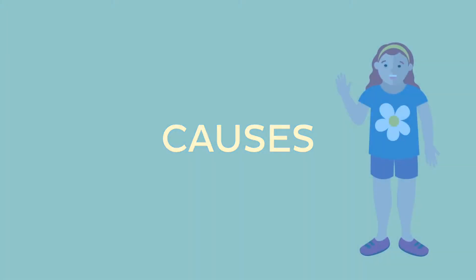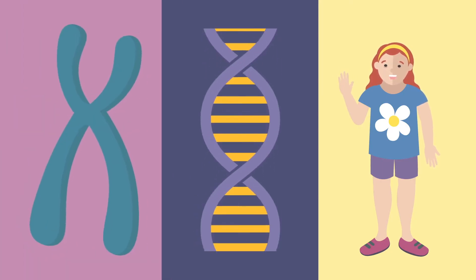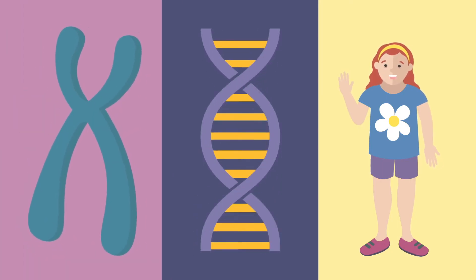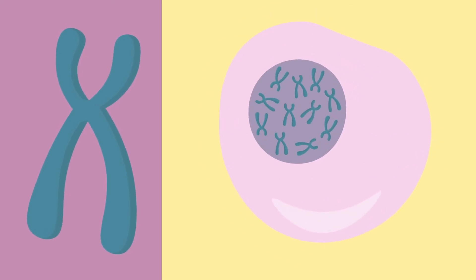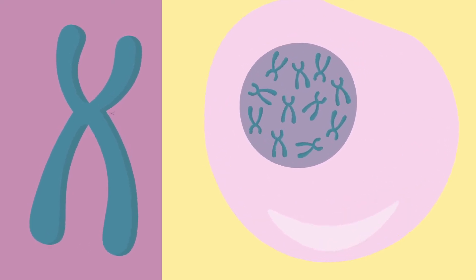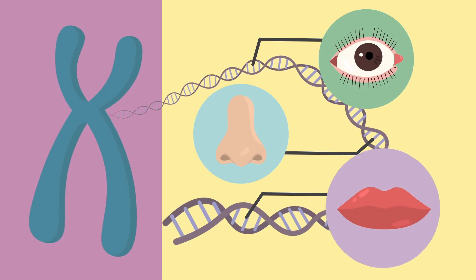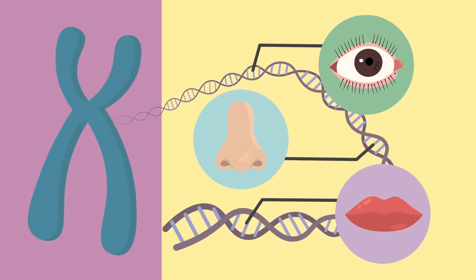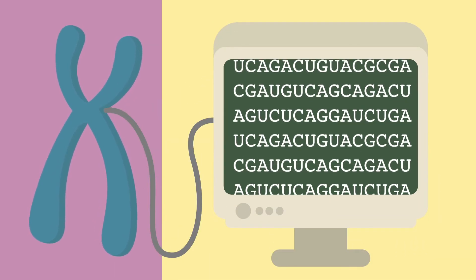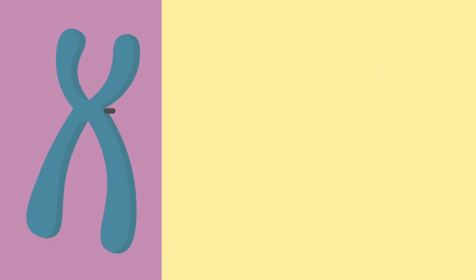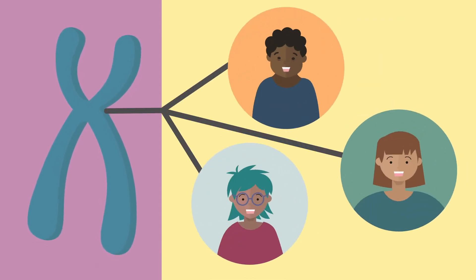Down syndrome is a genetic disorder affecting the chromosomes. Chromosomes are tiny structures present in every cell of our body. They contain densely grouped genetic information about all the characteristics of a human being — in other words, they pack up the genetic code that determines who a person is going to be, what they'll look like, and how their body is going to function.